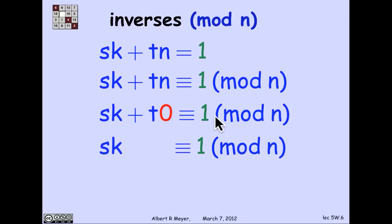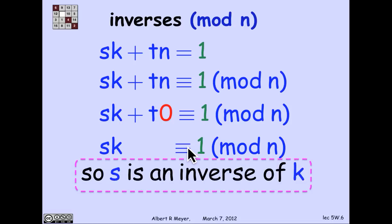But n is congruent to 0 mod n. So this becomes t times 0. And we're left with s k congruent to 1 mod n, which is exactly the definition of s being an inverse of k.